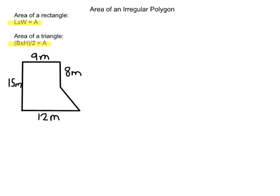Step 1 is to make this polygon into a rectangle and a triangle. We can connect a line right over here on the polygon, and we will divide this into a rectangle and a triangle. Step 1 is always to separate your irregular polygon into a right triangle and a rectangle. If there's more than one, just keep separating it until you have all the triangles and rectangles that you need.